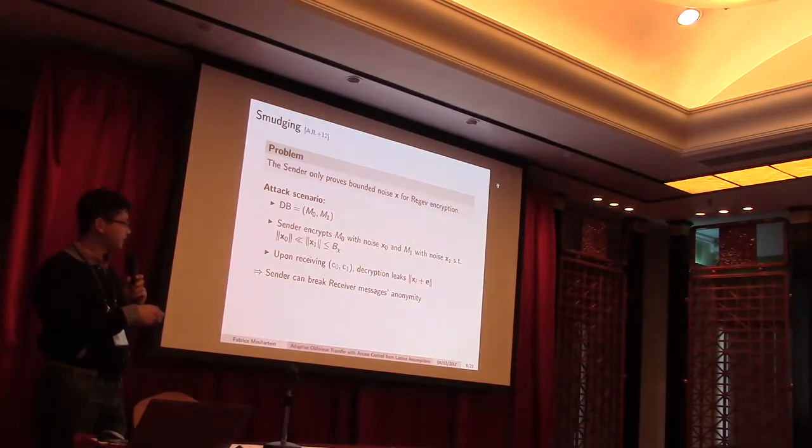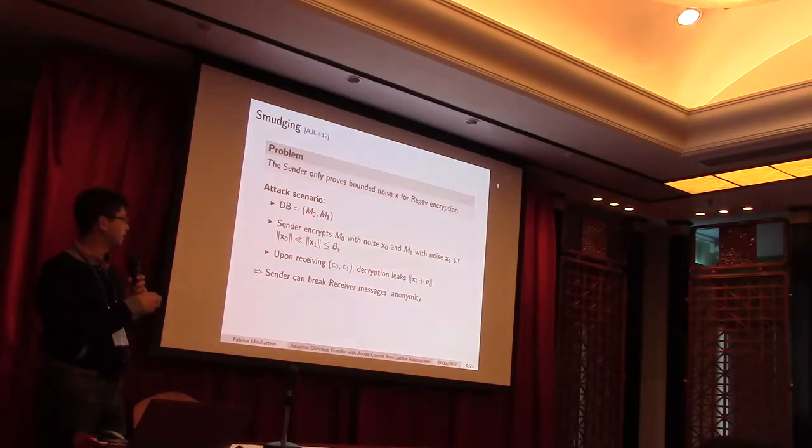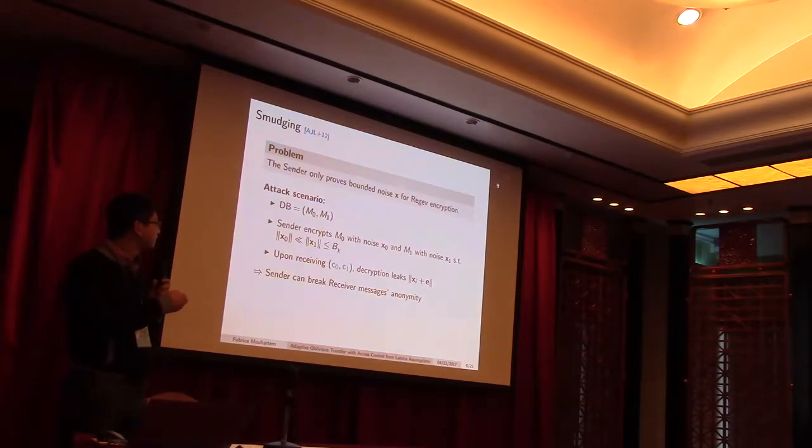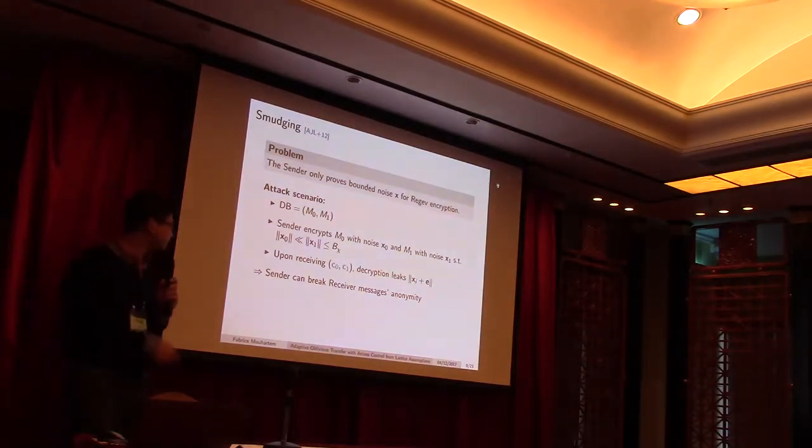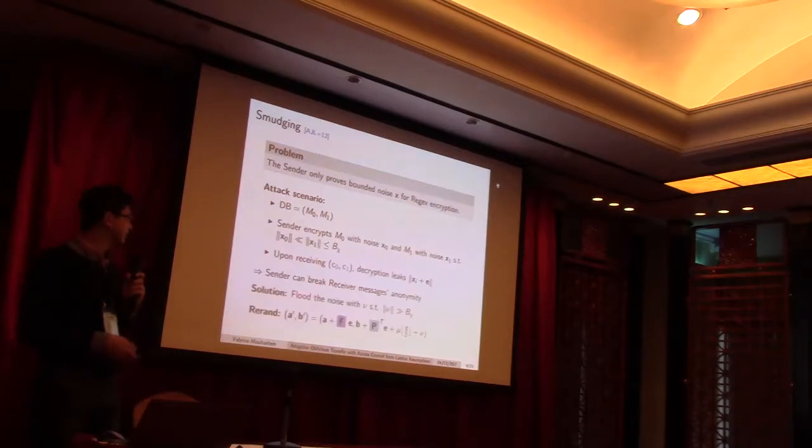So, basically, if we imagine that we have a database composed of two messages, M0 and M1, and the sender is malicious, it will encrypt the first message with a small noise and the second message with a noise close to the bound. And once we're sending the randomization, as I described in the previous slide, it will leak information on the norm of the noise.